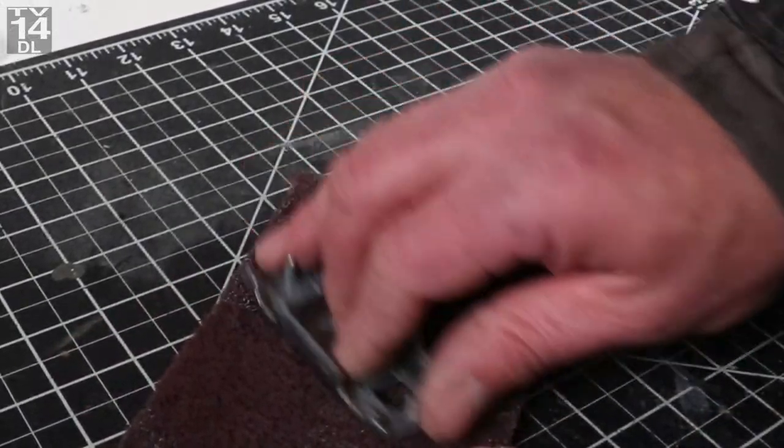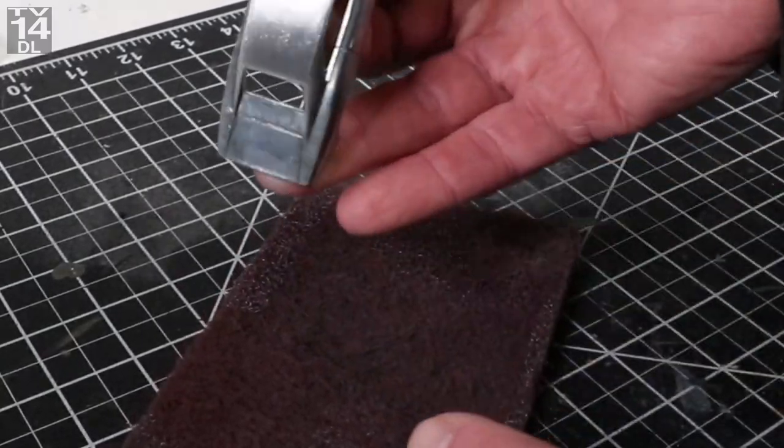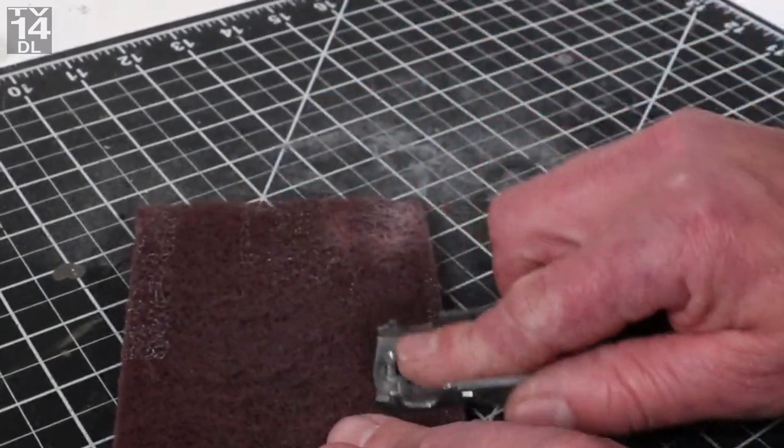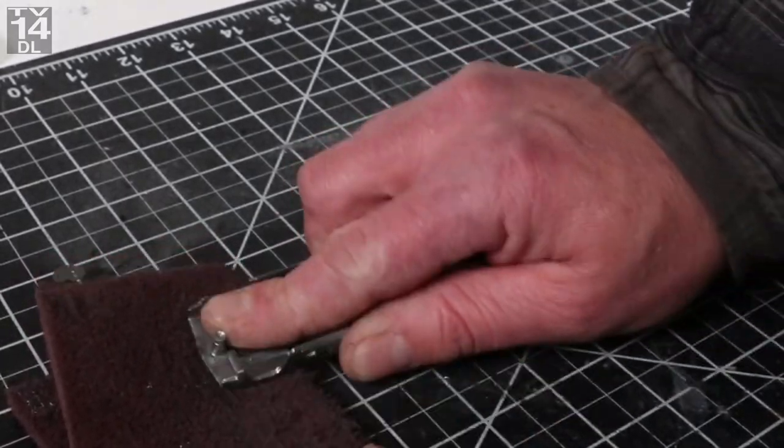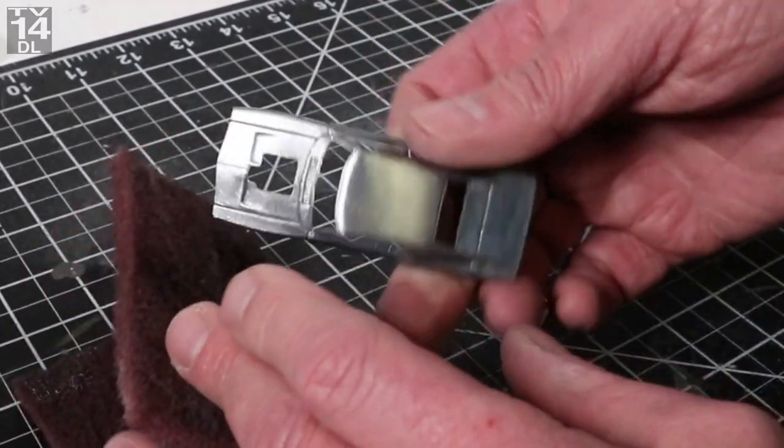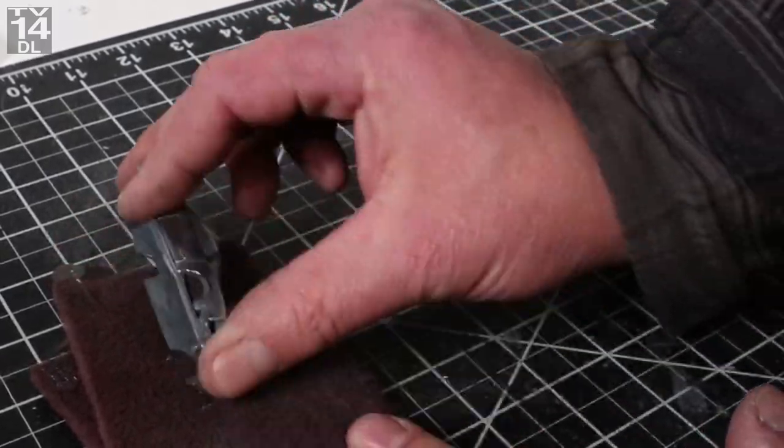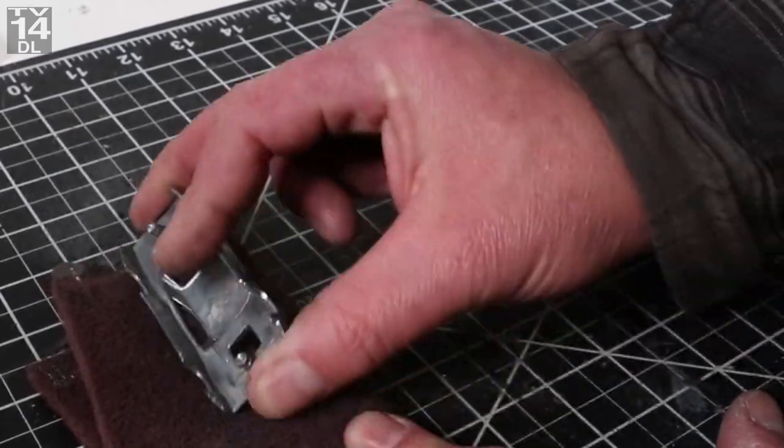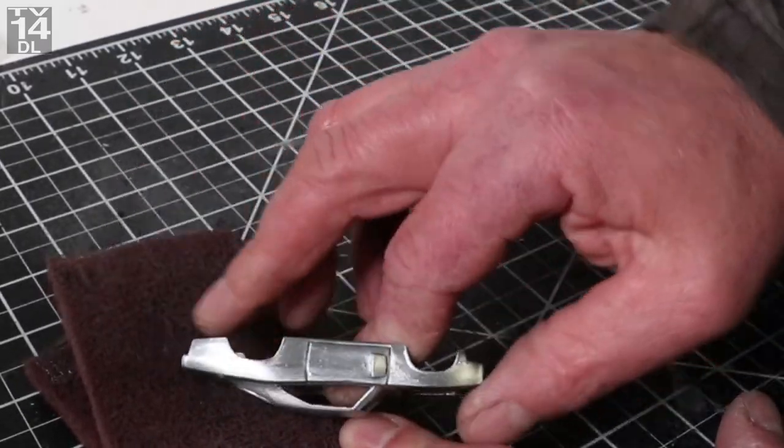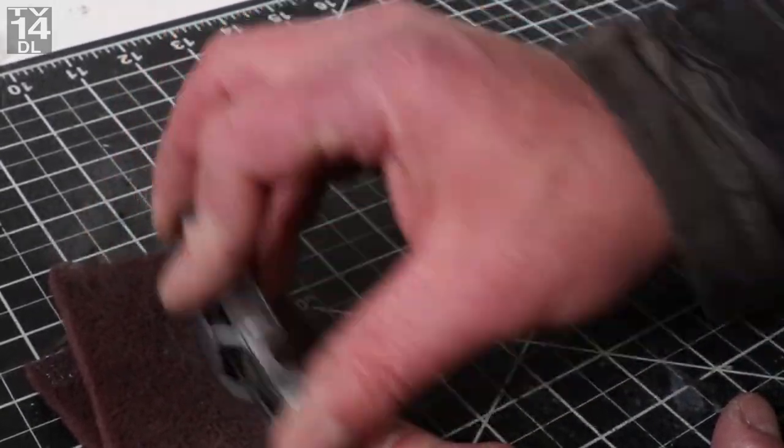The next process is I use a Scotch-Brite pad, and this really does give it a nice finish. It cleans off whatever and gives a nice finish so you can see what you're working with. And it also gives nice adhesion for any primer that you're going to use.